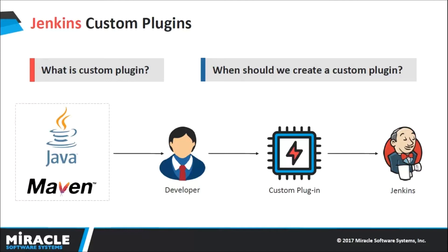But we faced a challenge when we were supposed to deploy applications onto different projects in Google App Engine. So we started configuring the applications at runtime with different service account credentials by storing the service account credentials file in a specific location and changing the credentials at runtime. It worked well with running jobs in sequence, but we faced a challenge when we ran jobs in parallel, where one job changed the credentials, causing a failure in authentication of other jobs. Finally, all these challenges made us develop a plugin which helps in deploying applications onto Google App Engine without any conflict with other projects. We also provided additional functionalities like stopping and deleting the previous versions on successful deployment of applications.